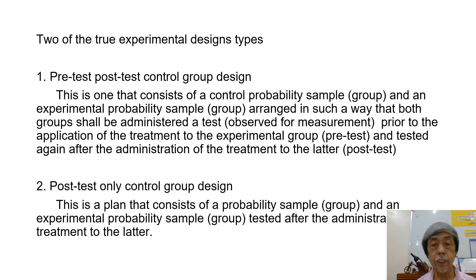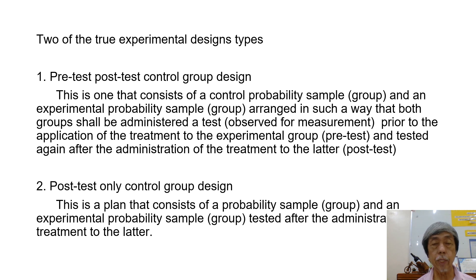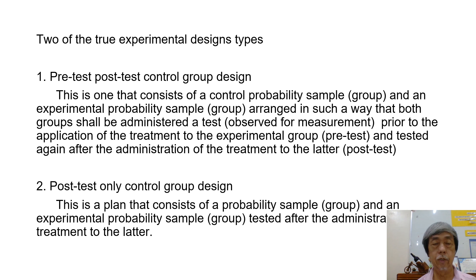The post-test only control group design is a plan that consists of a control probability sample or group and an experimental probability sample or group, tested after the administration of the treatment to the experimental group.